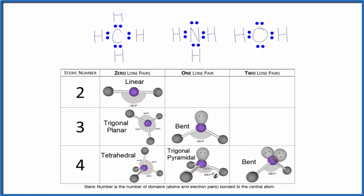If we look at water, now we have two lone pairs. We still have four things around it, two hydrogens and two lone pairs. So our steric number is four with two lone pairs. This is a bent molecular geometry.